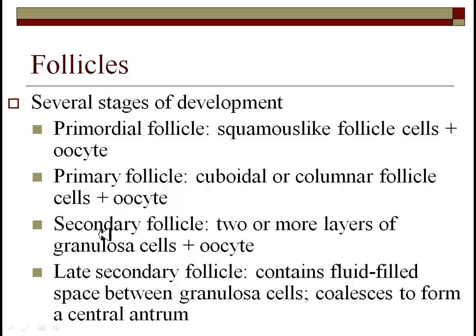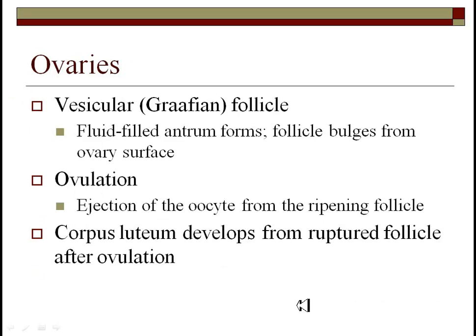Once those cells turn and become cuboidal or columnar shaped, that's called the primary follicle. Secondary follicles are where you begin to get granulosa cells — two or more layers. In the late secondary follicle you have quite a few granulosa cells as well as the beginnings of the antrum, which is a fluid-filled cavity. At the stage of the Graafian follicle, the fluid-filled antrum is clearly present and the follicle begins to bulge on the ovary and will actually rupture and eject the oocyte — almost like a volcanic eruption. Occasionally women can feel a twinge of pain around day 14 when they ovulate because it literally blows a hole in the side of the ovary.